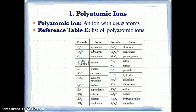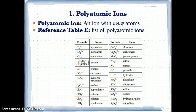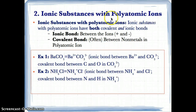Same idea here: NH4+, ammonium, has 1 N, 4 H's, and a charge of +1. So these are all the polyatomic ions you can find on Table E. Now let's talk about something called ionic substances with polyatomic ions.